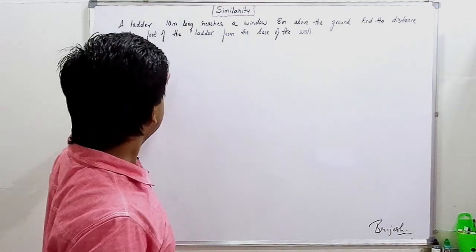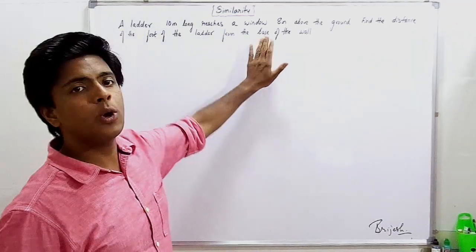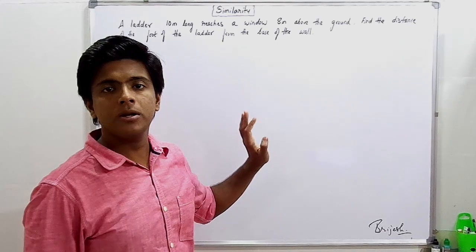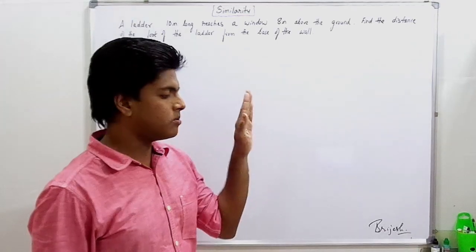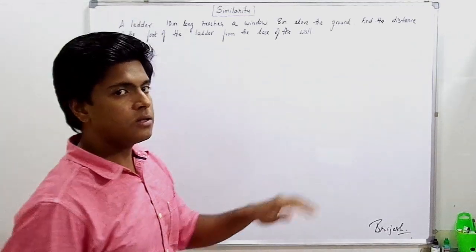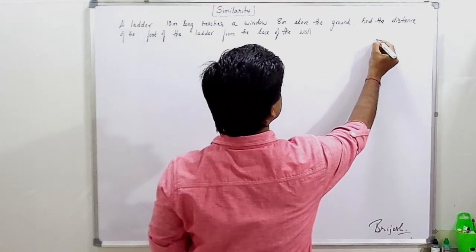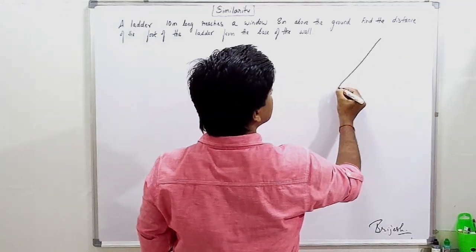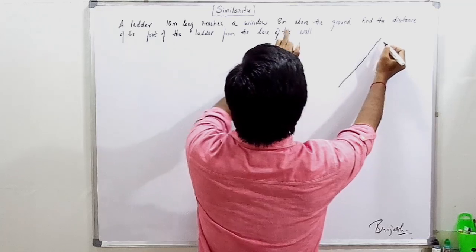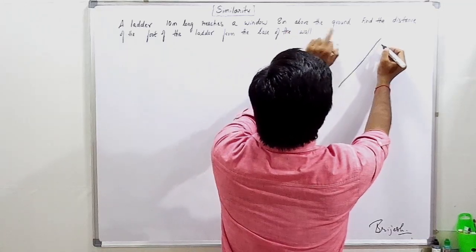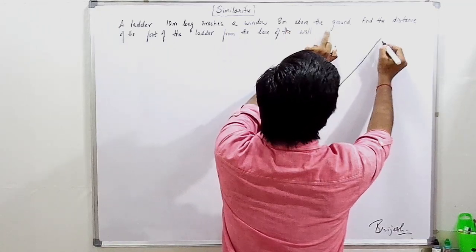A ladder 10 meters long reaches a window. What is a ladder? It reaches a window. The problem is about such a ladder. Here is a window, 8 meters above the ground.